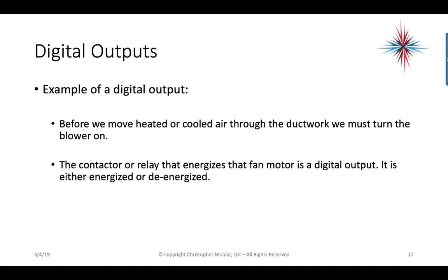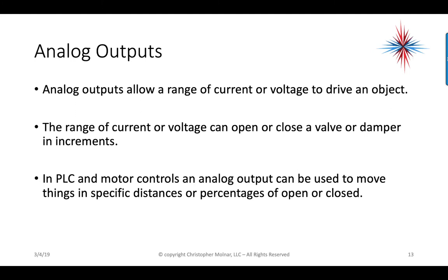An example of a digital output: before we move heated or cooled air through the ductwork, we have to turn the blower on. The contact or relay that energizes the fan motor is a digital output — it's either energized or de-energized. Analog outputs allow a range of current or voltage to drive an object. The range of current or voltage can open or close a valve or damper in increments. In PLC and motor controls, an analog output can be used to move things a specific distance or percentage of open and closed — we're dealing with percentages.